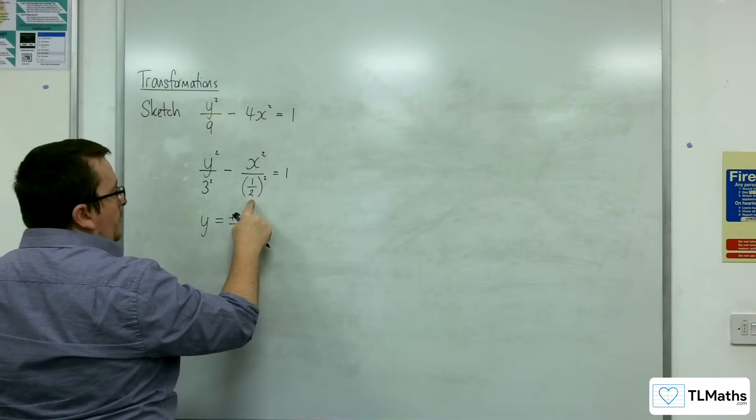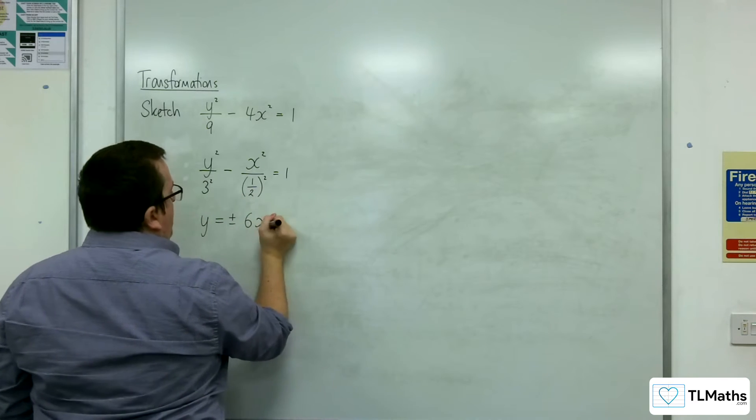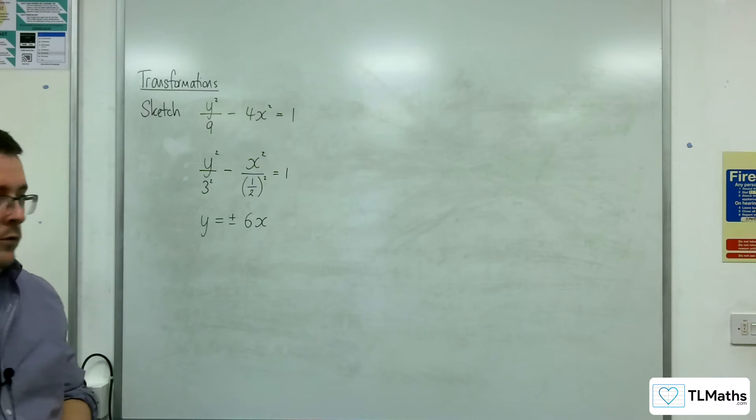Now 3 divided by 1 half is going to be 6, so that's 6x. So plus or minus 6x is what we're looking for.